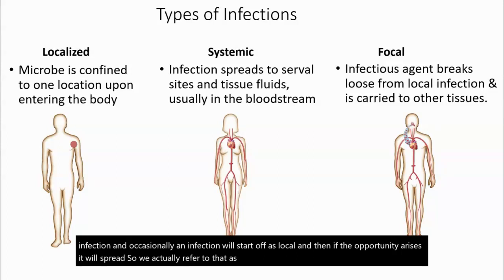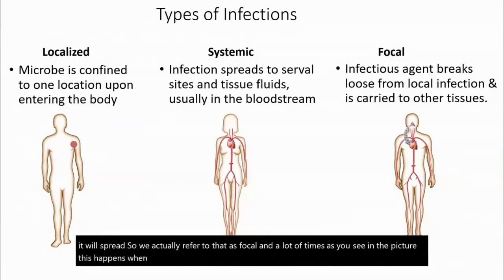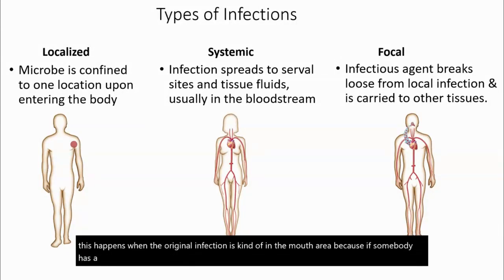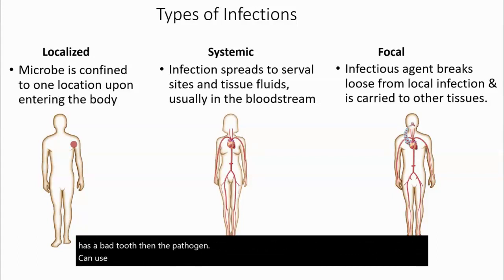A lot of times, as you see in the picture, this happens when the original infection is in the mouth area, because if somebody has a bad tooth, the pathogen can use that as an entry into the bloodstream and then spread throughout the body, even though it normally wouldn't have.